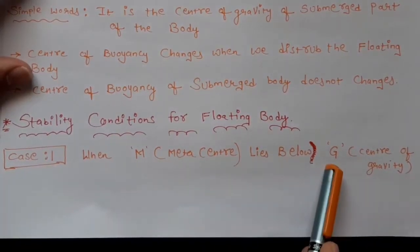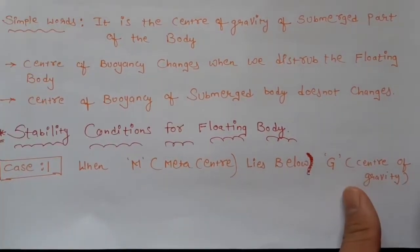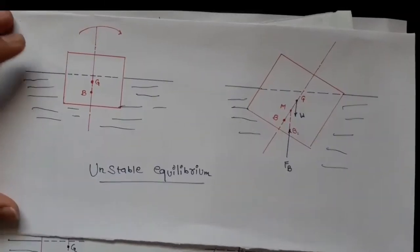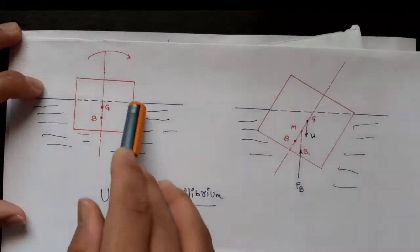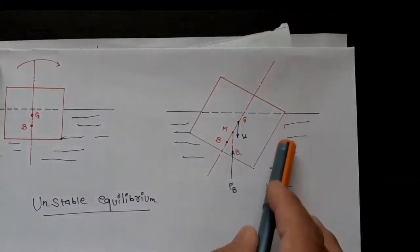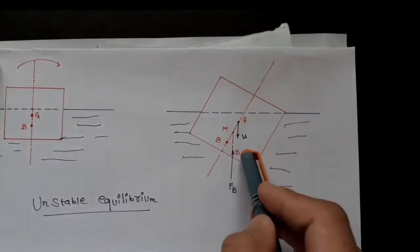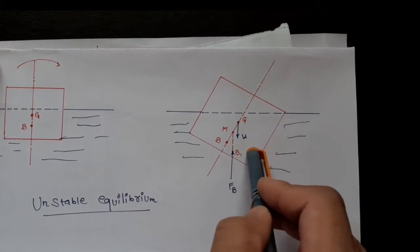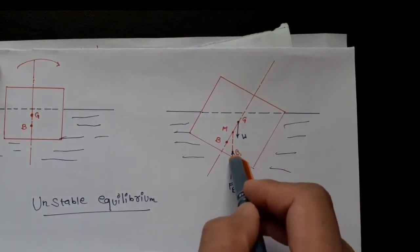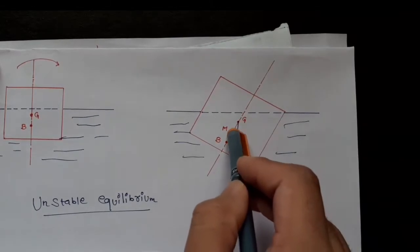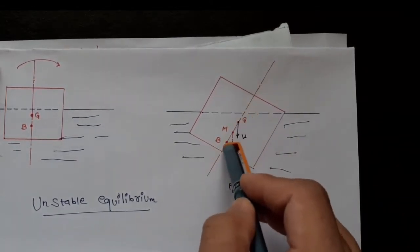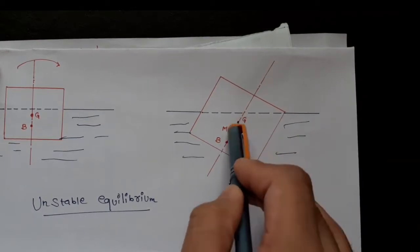Case 1: when metacenter lies below the center of gravity. When the body is in upright condition and we apply an external moment in the clockwise direction, the body tilts. Due to this tilting, the center of buoyancy shifts to B1. FB will act at B1, and its line of action intersects the axis of the body at M, between G and B — so M lies between G and B.